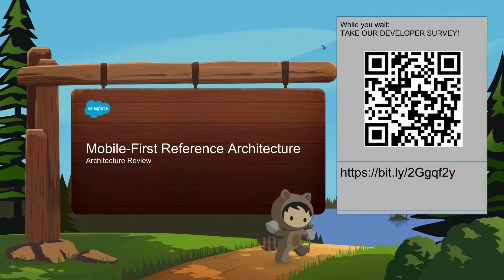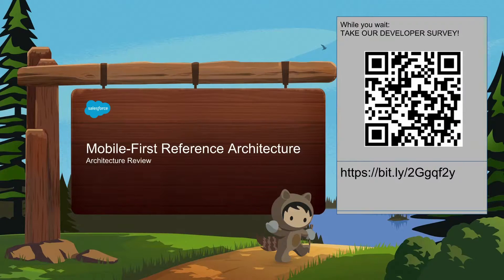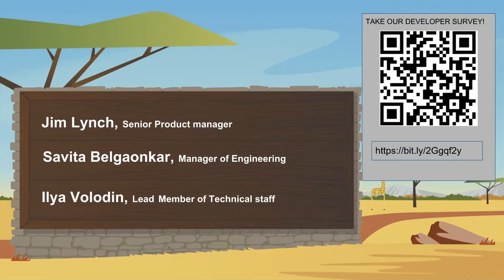Thank you everyone for joining us. We're going to start our session now talking about the Commerce Cloud mobile first reference architecture. We're doing a quick survey — you can scan the QR code with your camera or type in the bit.ly link to a Google survey, and we'll show it again at the end of the presentation. We'd really appreciate your feedback.